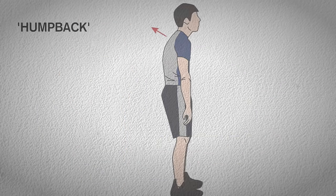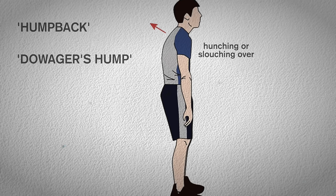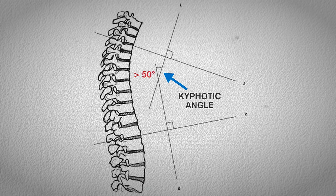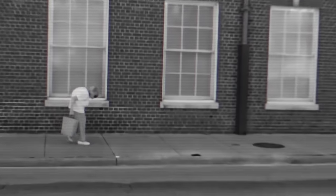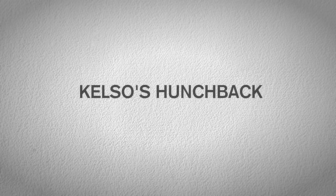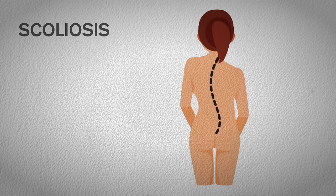With kyphosis, specifically in the thoracic region, there is a humpback appearance, or dowager's hump, where a person may look like they're hunching or slouching over. A normal thoracic curve should have a slight kyphotic angle ranging from 20 to 50 degrees, but if it gets past 50 you're going humpback. This curvature is more frequently seen in males than in females, although there's a marked increase for older women as they're more likely to suffer from osteoporosis. Other common names include round back and Kelso's hunchback.